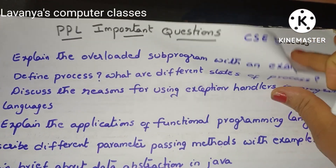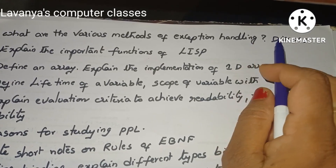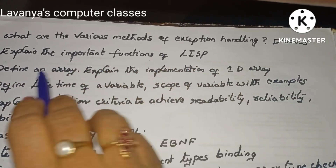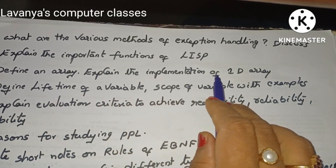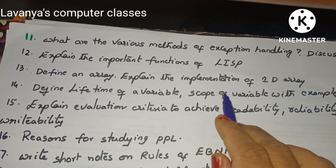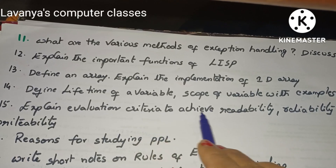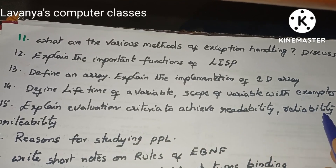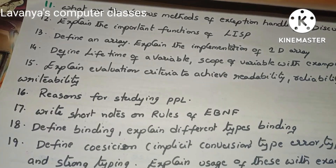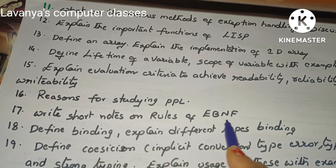More important questions: what are the various methods of exception handling — discuss; explain the important functions of LISP; define an array and explain the implementations of a 1D array; define lifetime of a variable and scope of variables with examples; explain evaluation criteria to achieve readability, reliability, and writeability; what are the reasons for studying PPL; and write short notes on rules of EBNF.